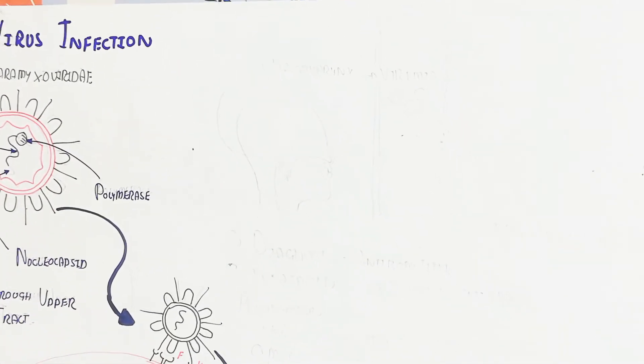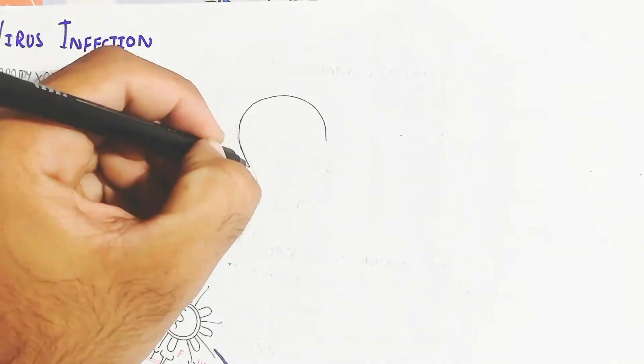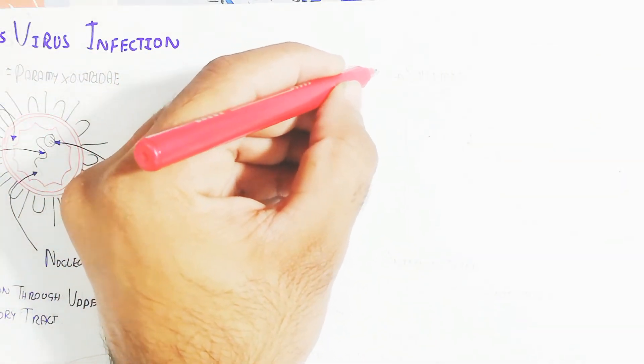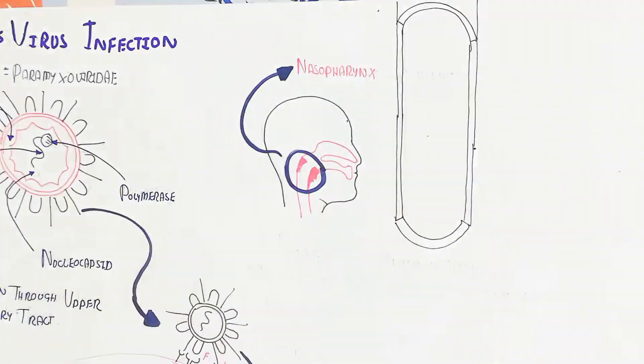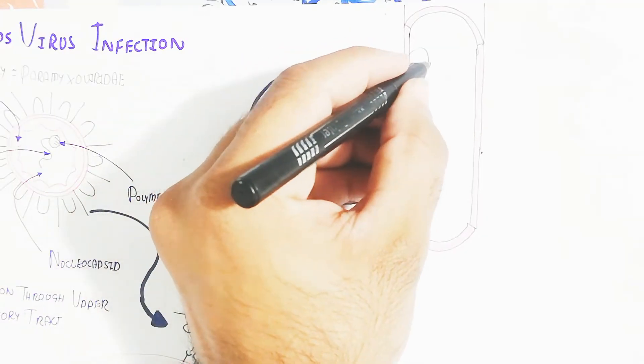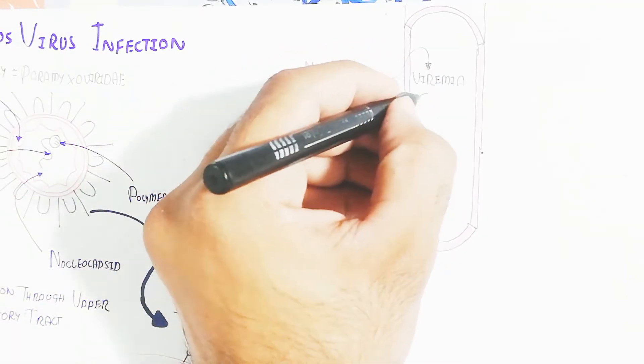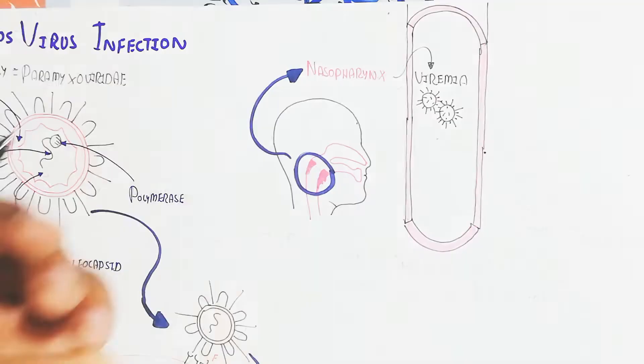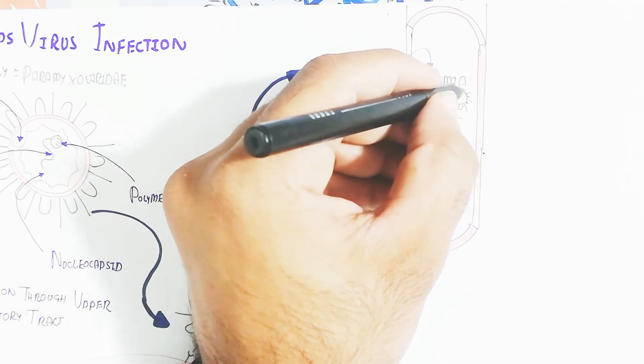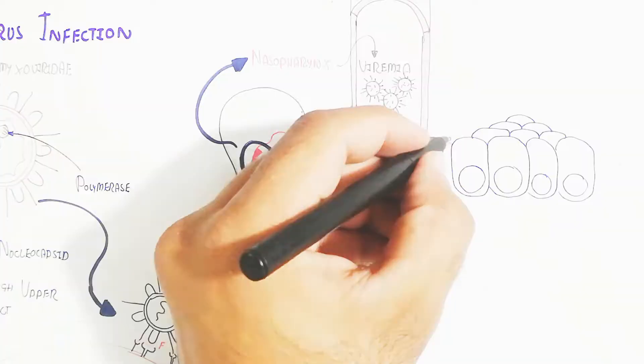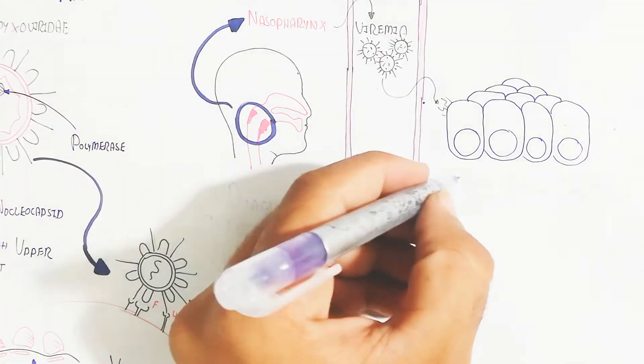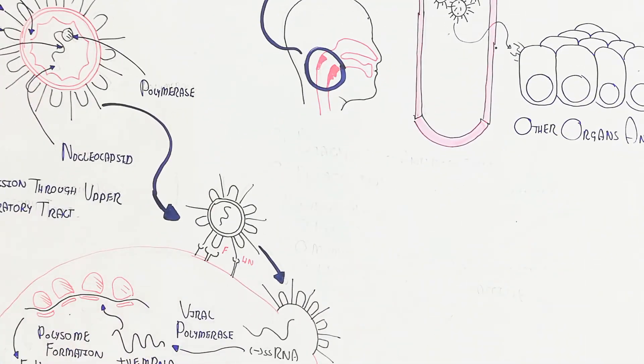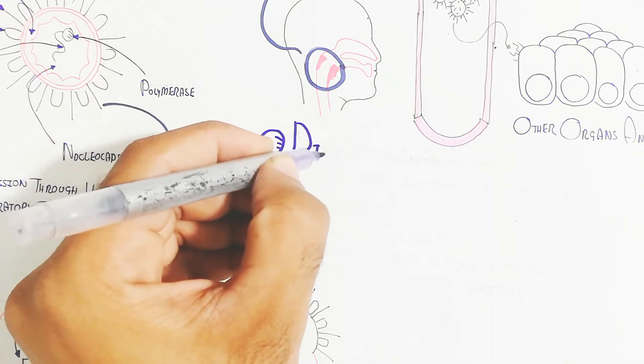Let's begin to understand the transmission to other organs and tissues. Here is the person which is infected through the upper respiratory tract. The swelling will lead to the nasopharynx and will move into the blood circulatory system. This virus after replication will lead to viremia in the blood circulatory system, will target other organs and tissues and damage them also.